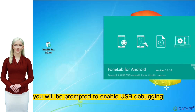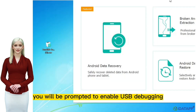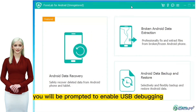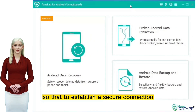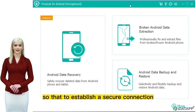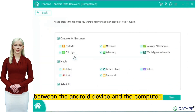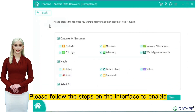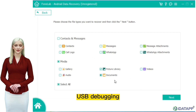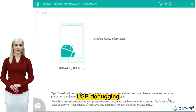you will be prompted to enable USB debugging, so as to establish a secure connection between the Android device and the computer. Please follow the steps on the interface to enable USB debugging.